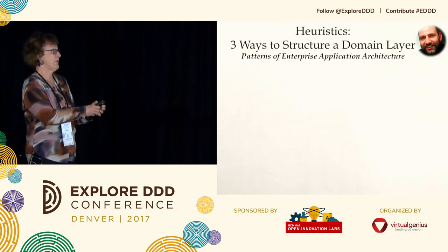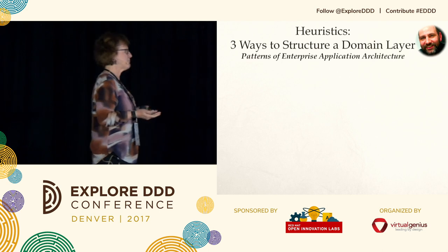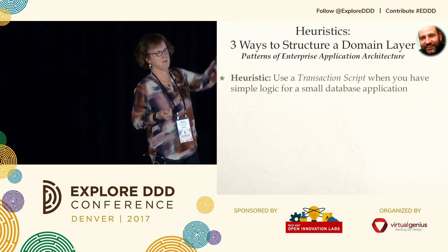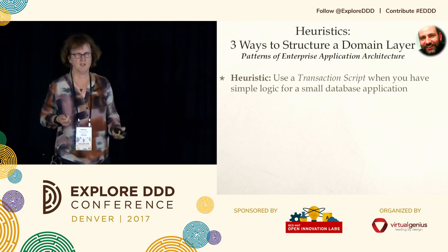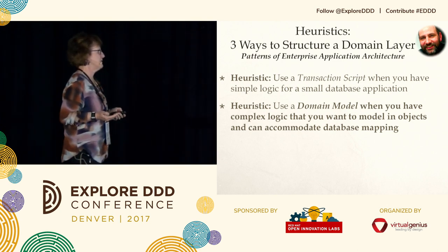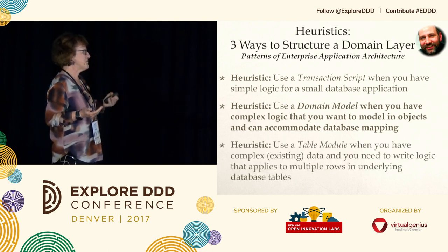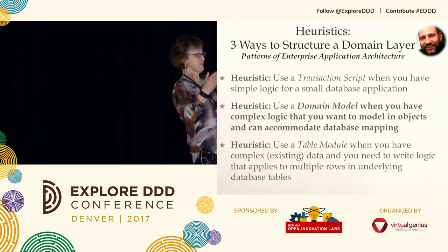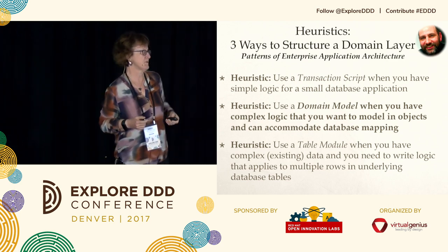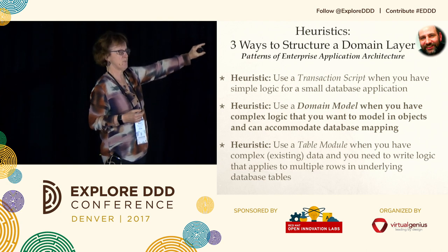To give a quick example from Patterns of Enterprise Application Architecture — and I'm not picking on it, it's a classic — I've turned these into pithy heuristics: use a transaction script when you have simple logic; use a domain model when you have complex logic and can accommodate objects to deal with the mapping issue; and use the table module whenever you have complex existing data primarily and need to write logic that could apply to multiple rows rather than a single instance.